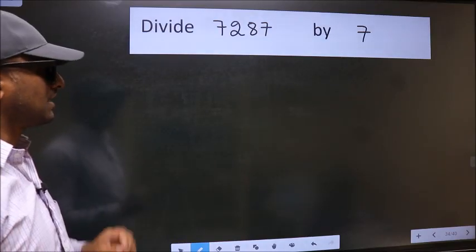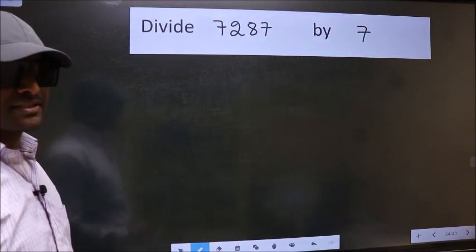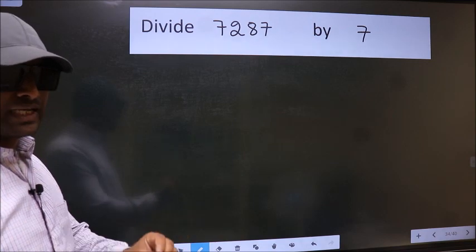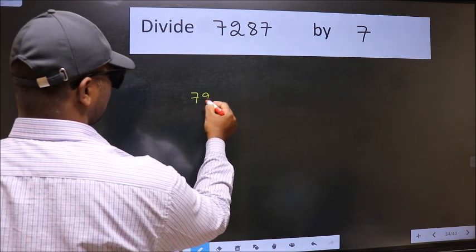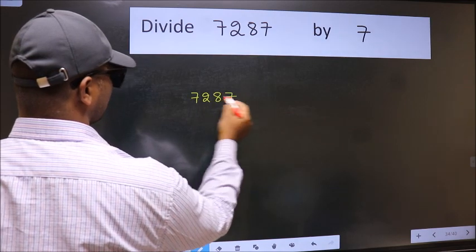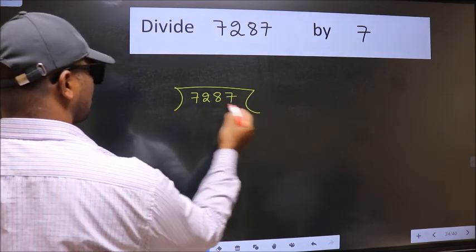Divide 7287 by 7. To do this division, we should frame it in this way. 7287 and 7 here.